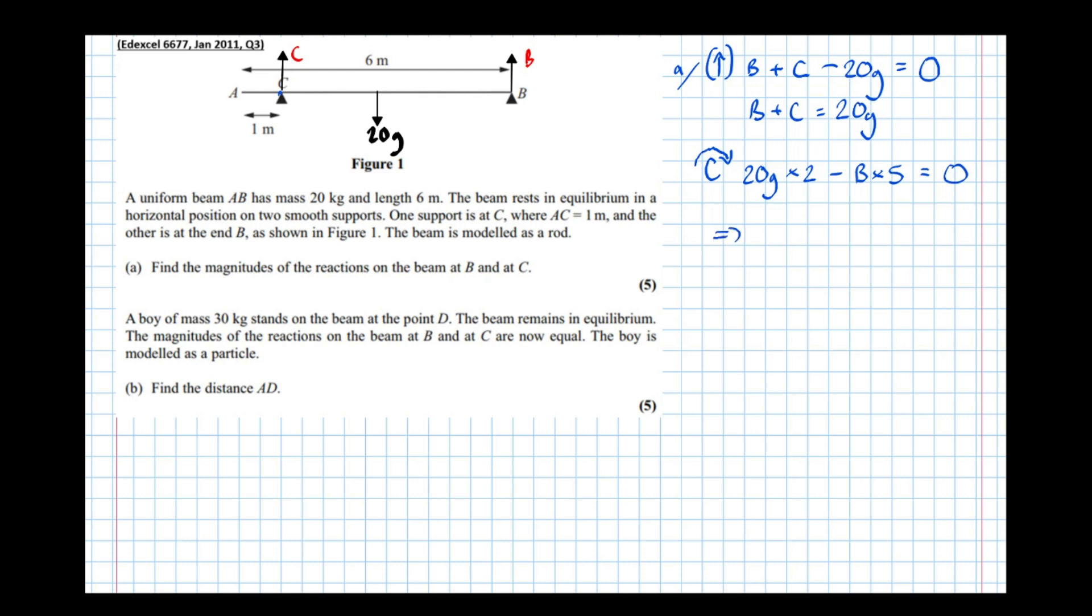And when a bar is in equilibrium, when a body is in equilibrium, all moments sum to zero. Right, so that means that 5B equals 40G, which means that B equals 8G. And now we can use this equation that we got from resolving, which means that B plus C equals 20G, so 8G plus C equals 20G, which means that C equals 12G.